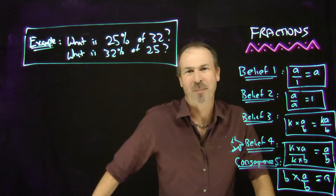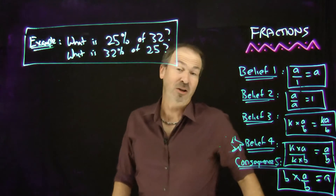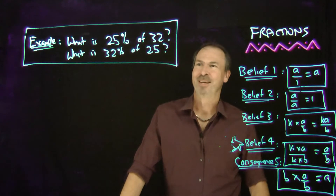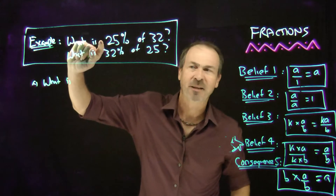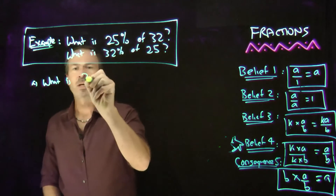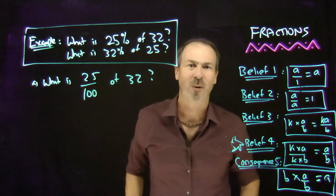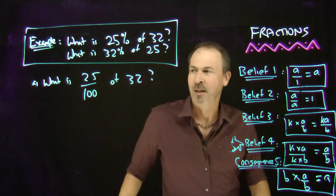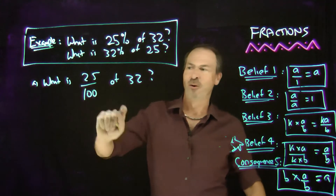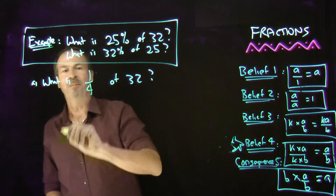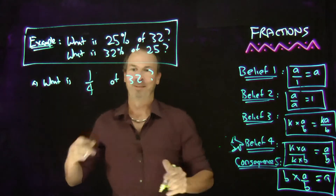Let's do one more example with two parts. Part A: what is 25% of 32? Well, 25% is a fraction — 25 per 100, that's 25 one-hundredths. What is 25 one-hundredths of 32? I realize that 25 over 100 is really the fraction one quarter. What is one quarter of 32? If you think of 32 kittens, one quarter of them would be eight of them. The answer is 8.